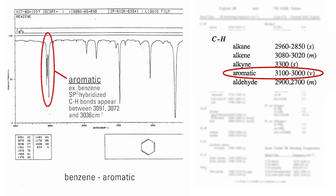As an example, the SP2 hybridized CH bonds of benzene appear at 3091, 3072, and 3036 centimeters to the minus 1 in its IR spectrum.